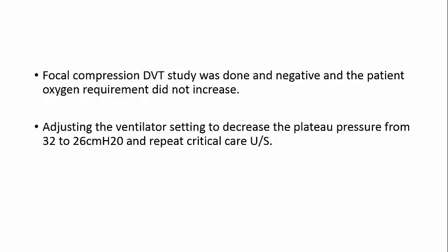To differentiate acute cor pulmonale due to massive pulmonary embolism from cor pulmonale due to right ventricular strain from positive pressure ventilation: in ventilator-induced cor pulmonale, you will not find significant desaturation or increased oxygen requirements, whereas with massive pulmonary embolism you will find very bad increased oxygen requirements. For our patient, oxygen requirements did not increase significantly, so we concluded acute cor pulmonale from mechanical ventilation. We adjusted ventilator settings to decrease plateau pressure from 32 to 26, targeting the lowest plateau pressure that maintains adequate saturation and ventilation.